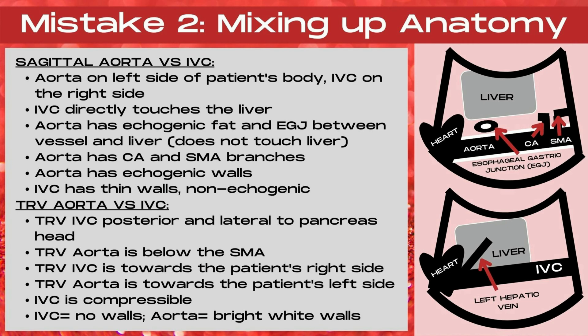In the top image, you'll notice the EGJ — this is the esophageal gastric junction — lies in between the aorta and the liver. There's also going to be echogenic fat in this region, and you'll note that the aorta does not directly touch the bottom surface of the liver. While in the bottom image, the IVC is going to directly connect with the bottom surface of that liver, and you'll also see the left hepatic vein coursing out of the liver.